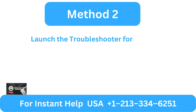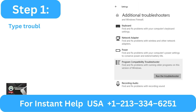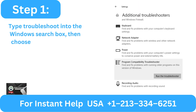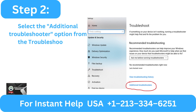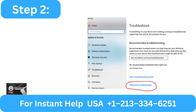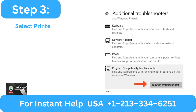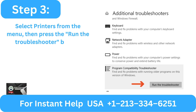Method 2: Launch the troubleshooter for printers. Step 1: Type troubleshoot into the Windows search box, then choose the troubleshoot settings program. Step 2: Select the additional troubleshooter option from the troubleshoot box. Step 3: Select printers from the menu, then press the run the troubleshooter button.